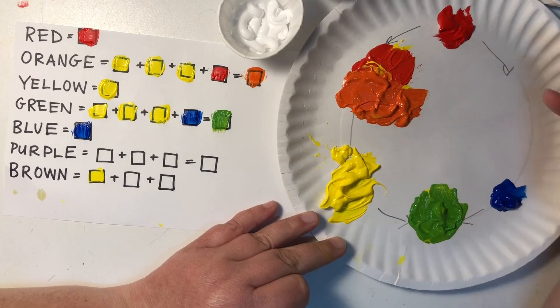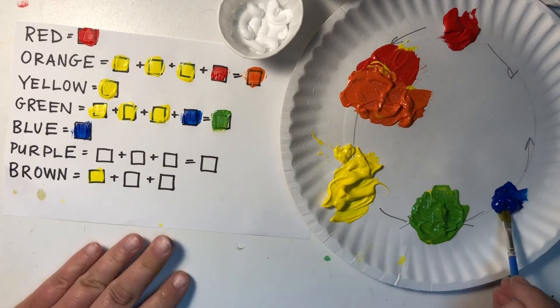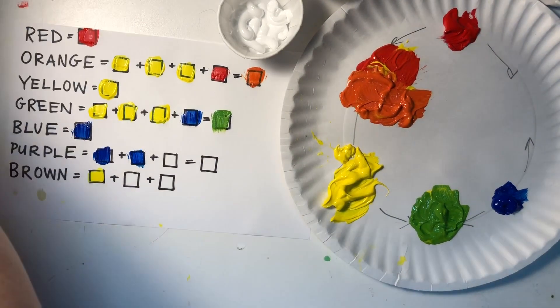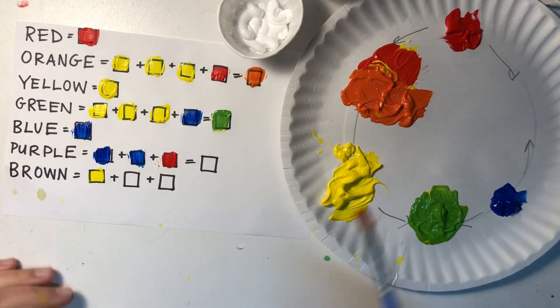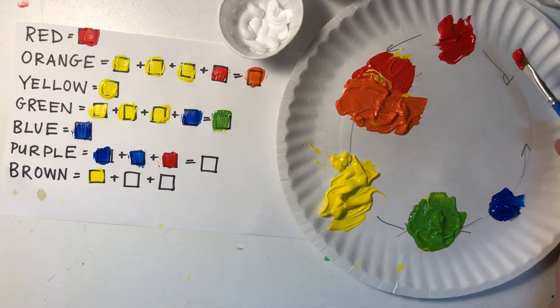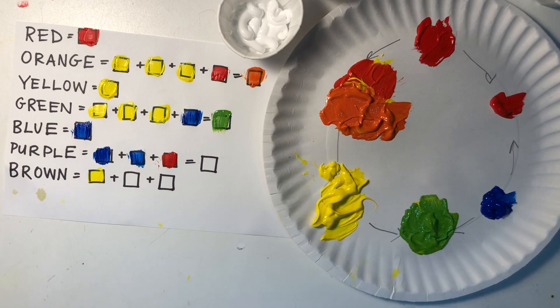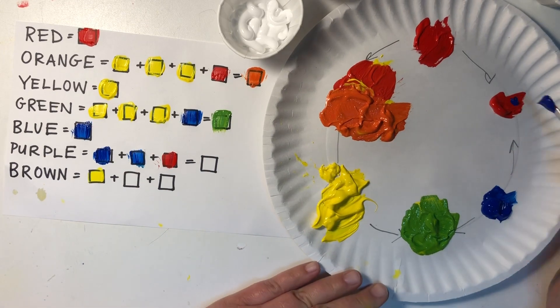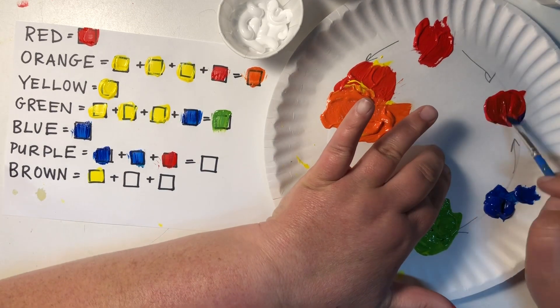Here we go. Let's try to make some purple now. Now you can make purple by adding two blues and one red to make a more indigo type of purple. Let's see what happens. One scoop of red and two scoops of blue. Let's mix that together.